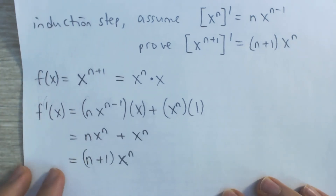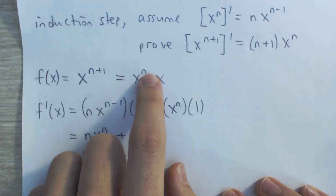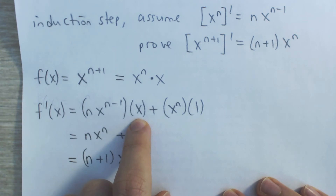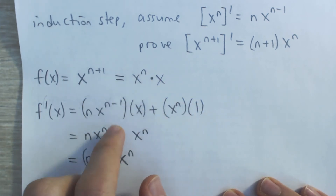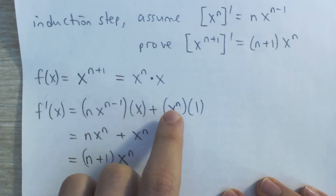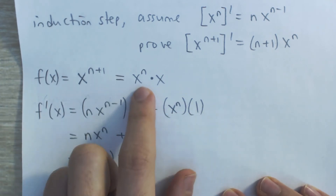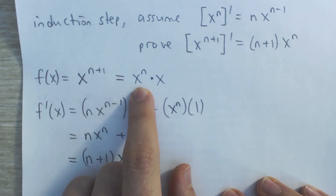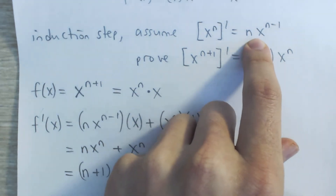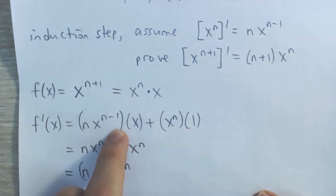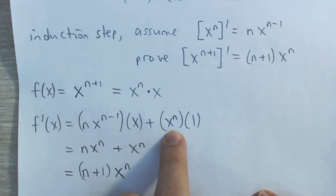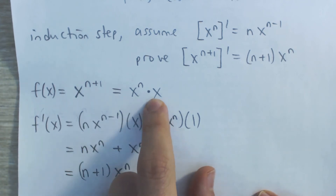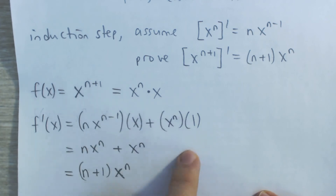Remember the product rule? It's the derivative of the first function times the second function, plus the first function times the derivative of the second. So the derivative of the first function, x to the n, is n times x to the n minus 1 by our induction hypothesis, times the second function x, plus just the first function x to the n, times the derivative of the second function x, which is just 1.